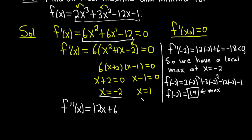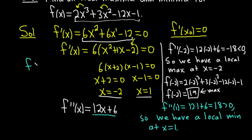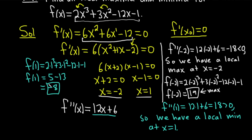Now let's check x equals 1. f double prime of 1 equals 12 times 1 plus 6, which is 18 — that's positive, so we have a local minimum at x equals 1. To find the minimum value, we plug 1 into the original function: f of 1 equals 2 times 1 cubed plus 3 times 1 squared minus 12 times 1 minus 1. That gives 2 plus 3 minus 13, which equals negative 8. So the local minimum value is negative 8.